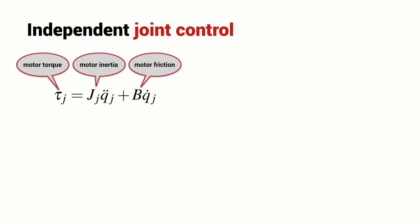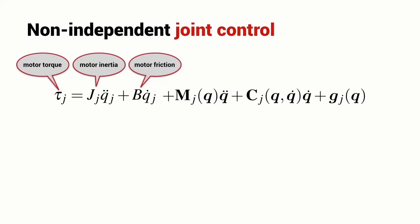One is a function of the motor inertia and the motor's acceleration, the motor's viscous friction and the motor's angular velocity. Now, we're going to consider the more realistic case of non-independent joint control and we've added the so-called rigid body dynamic terms here.